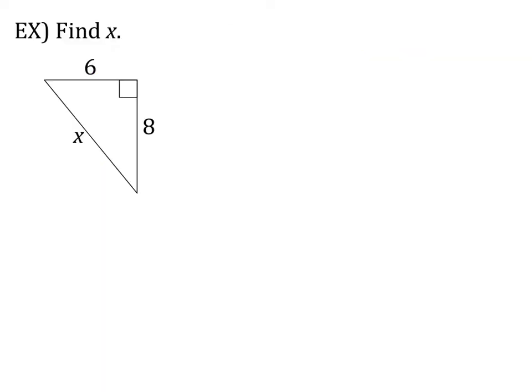Now let's look at this example. Find X. So we're given a triangle, and we see they've given us the leg 6 and the leg 8, and we are looking for the hypotenuse X. So we know Pythagorean Theorem says that A squared plus B squared equals C squared. So if I plug in my sides, that's going to be 6 squared plus 8 squared equals X squared. We know that 6 squared is 36, and 8 squared is 64.